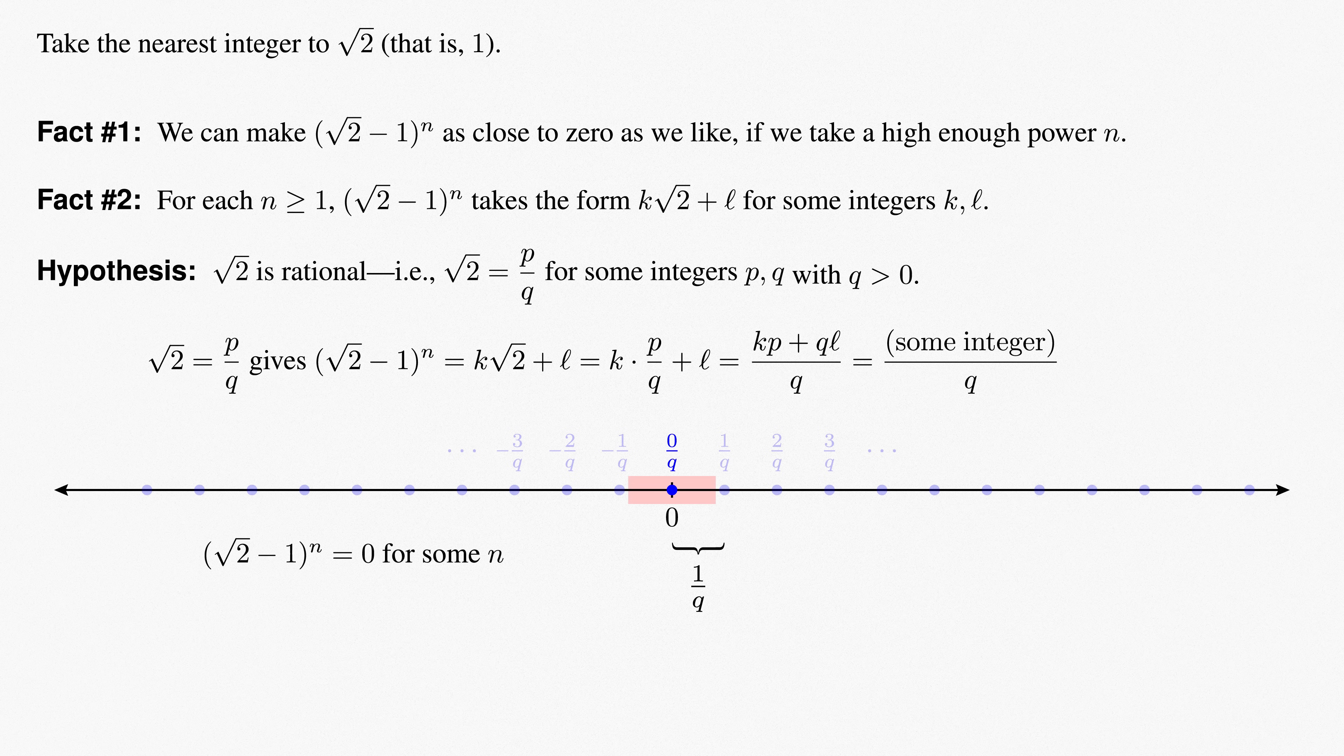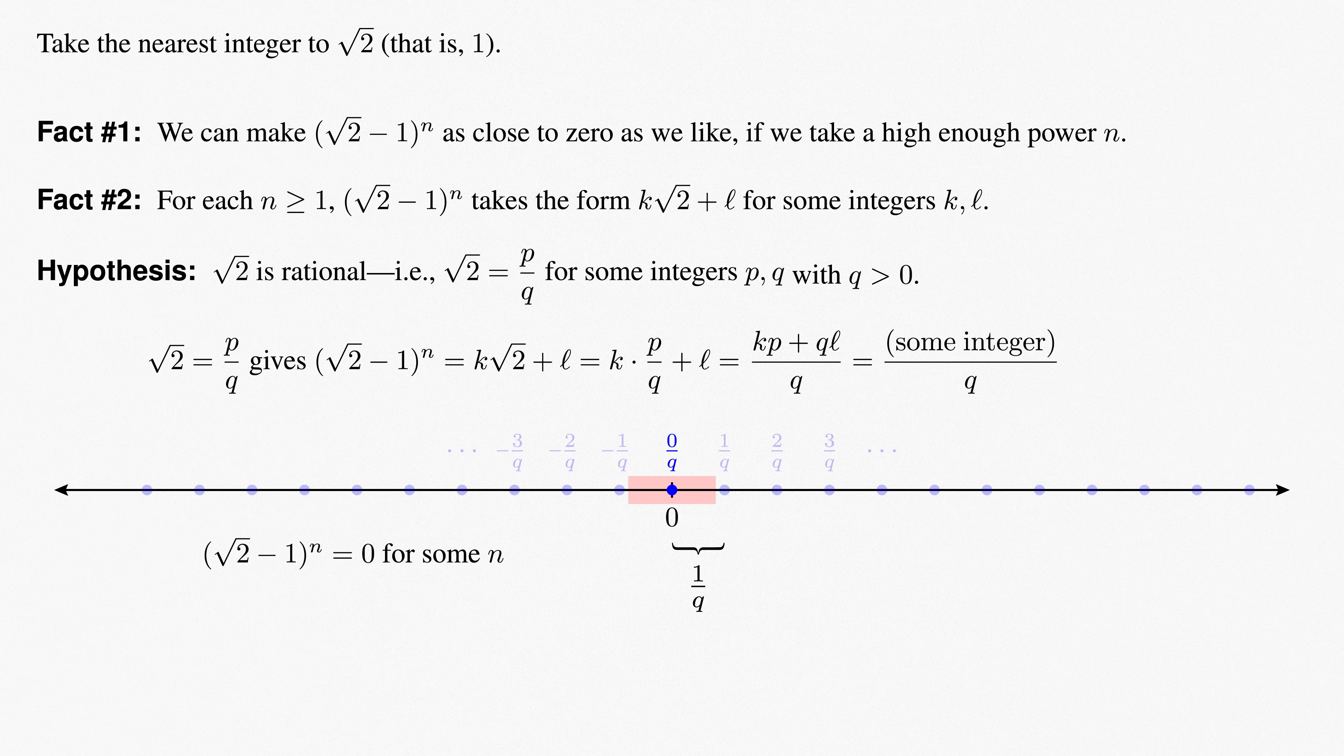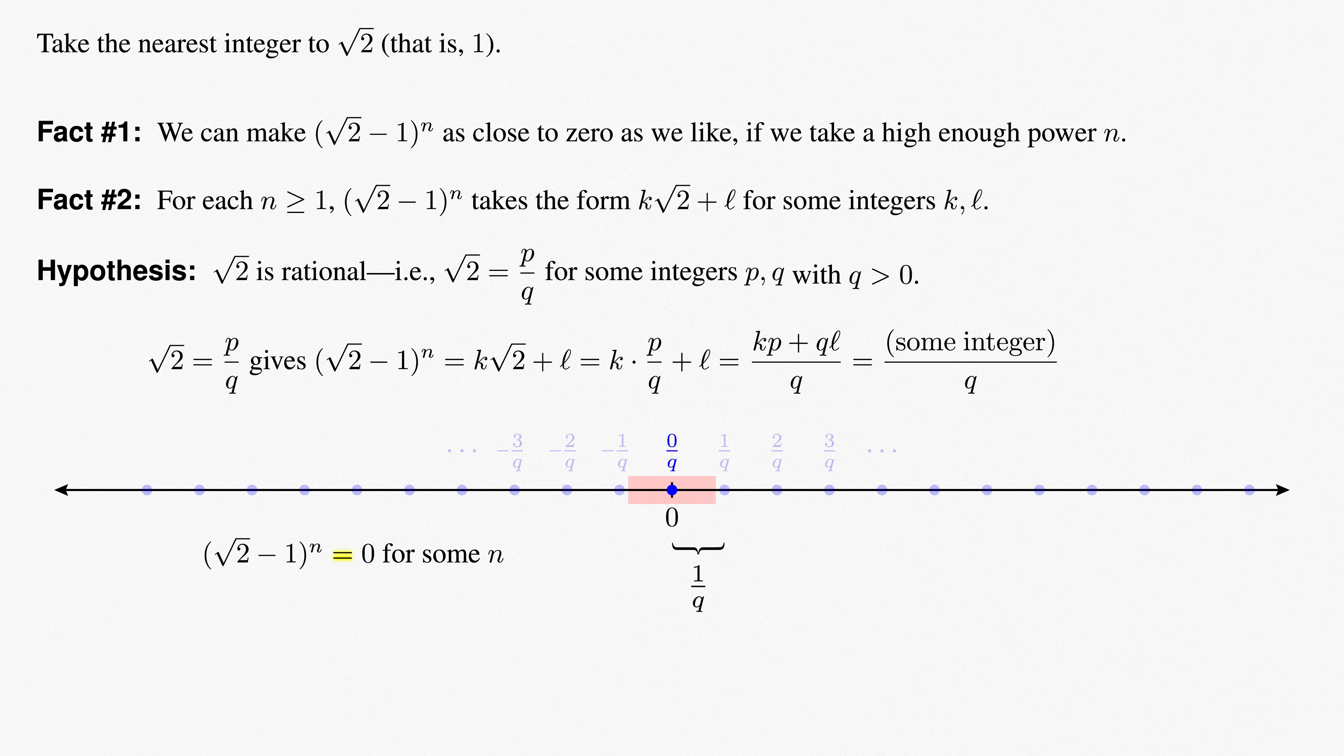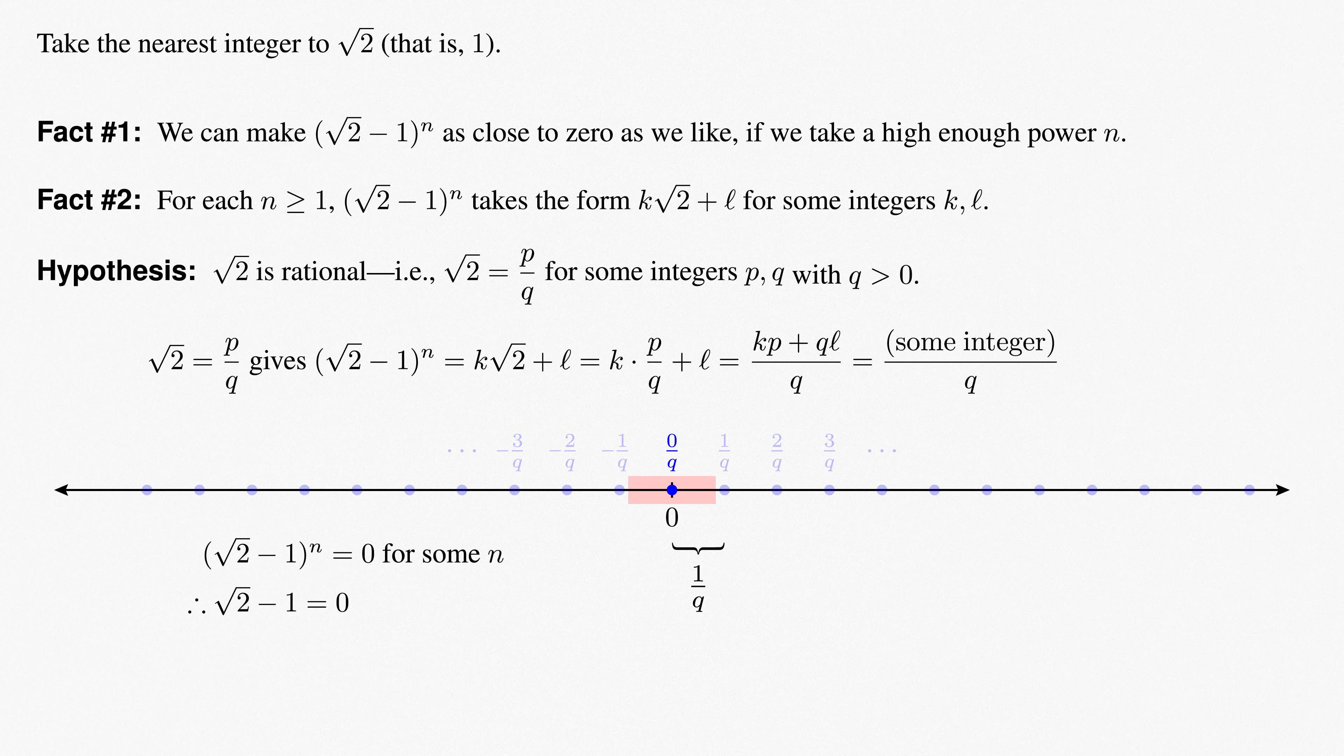In other words, root 2 minus 1 to the nth must equal 0 for some n. Full stop, this is an actual equality of numbers, not a statement about limits. But if this power root 2 minus 1 to the nth is equal to 0 for some n, then root 2 minus 1 equals 0. In other words, root 2 equals 1. In particular, we conclude that root 2 is an integer.